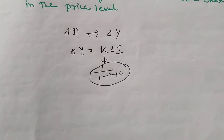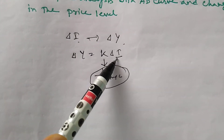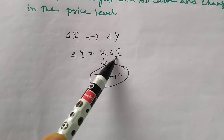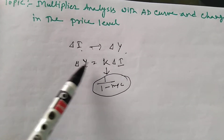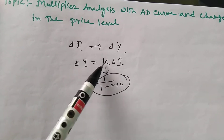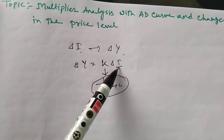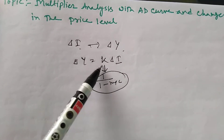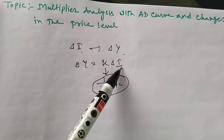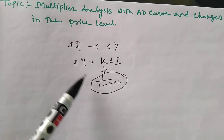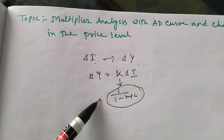That means: what is the change in income when there is a change in investment by, say, rupees 100? The change in income will be K times the change in investment. If the multiplier is 2 and the change in investment is 100, then the change in income will be 200. This is the investment multiplier model.